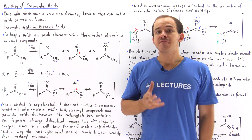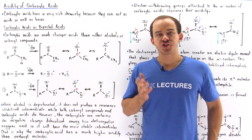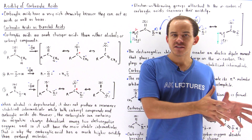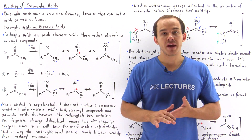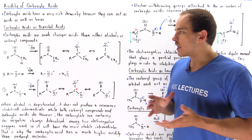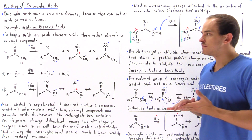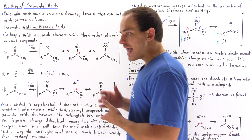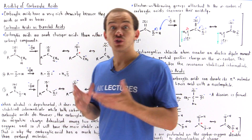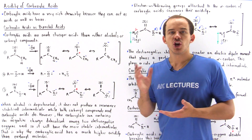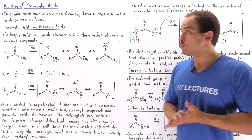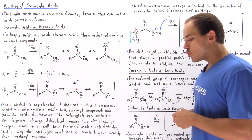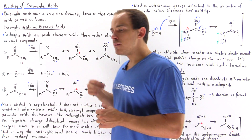Carboxylic acids have a very rich chemistry because they can not only act as acids but they can also act as bases. In this lecture we're going to focus primarily on the ability of carboxylic acids to act as Brønsted-Lowry acids, Lewis acids, as well as Lewis bases. Let's begin with Brønsted-Lowry acids.